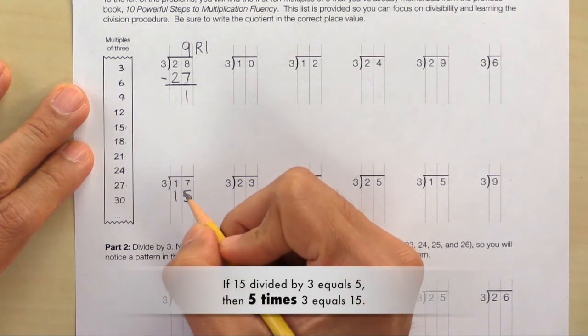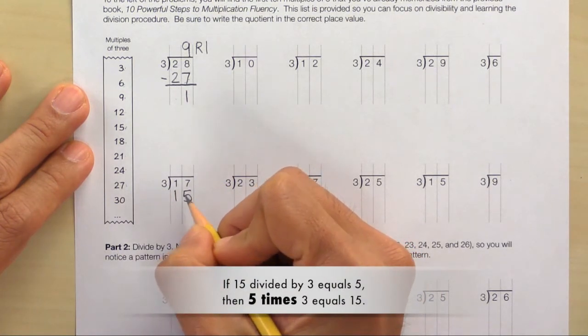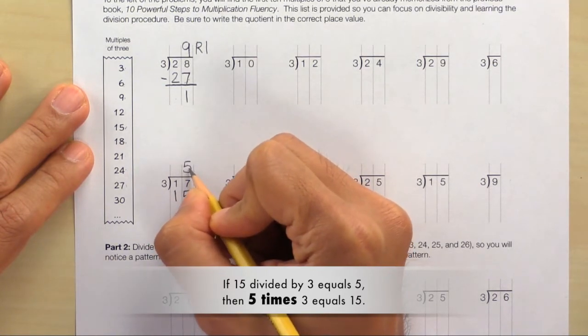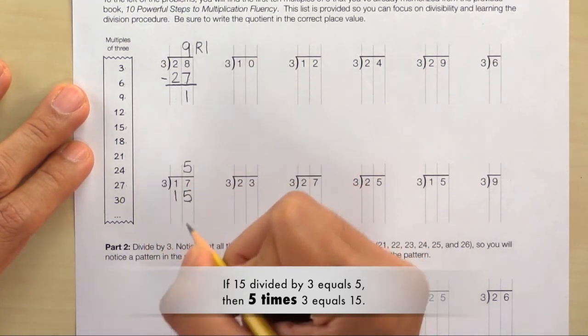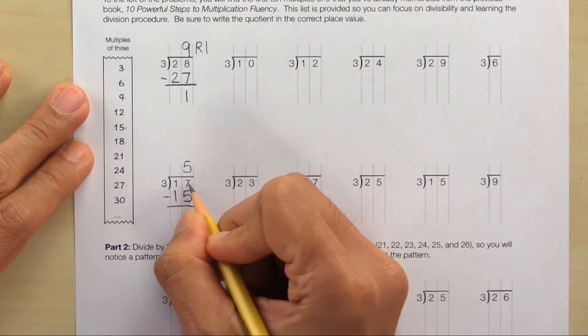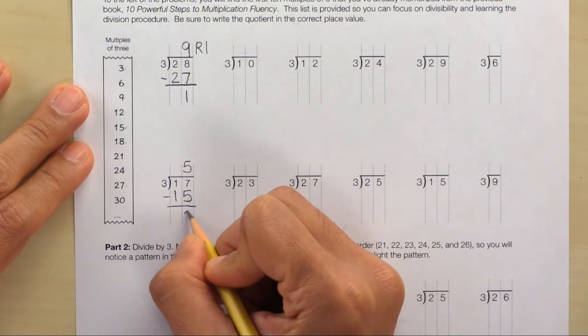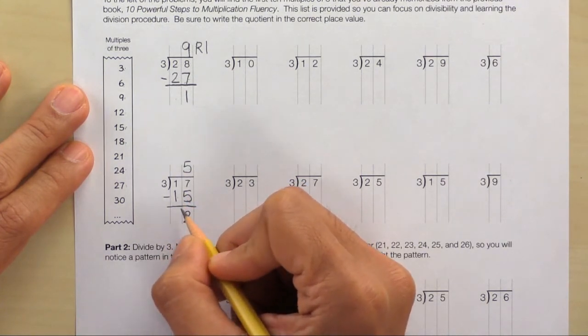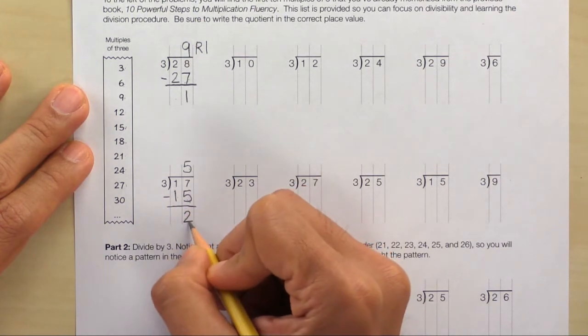So the if-then statement is, if 15 divided by 3 equals 5, then 5 times 3 equals 15. That's true. So let's subtract. 7 minus 5 is 2. 1 minus 1 is 0. And our final answer is 5 remainder 2.